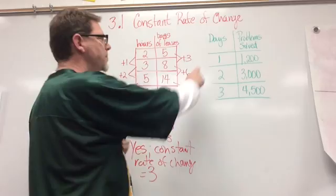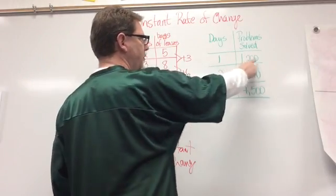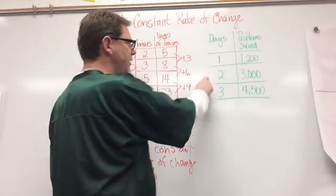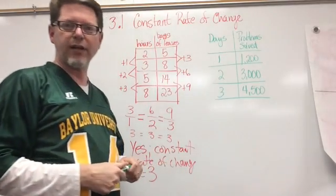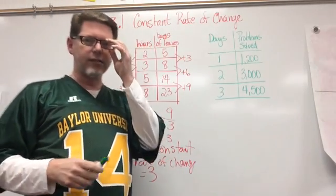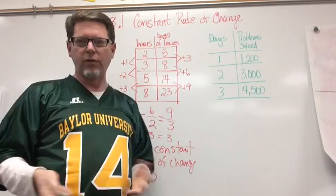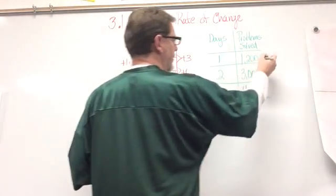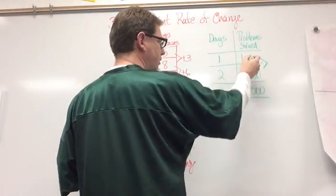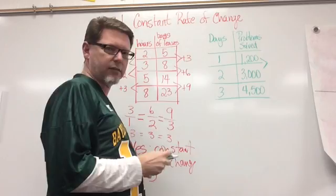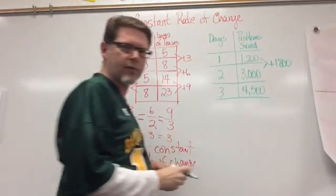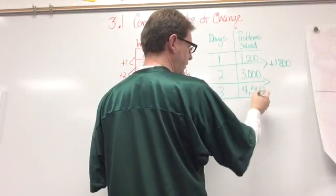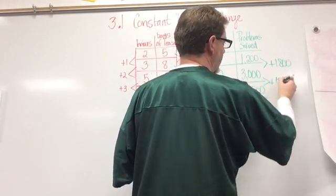So if I look at on the first day, we had 1,200 problems solved. On the second day, 3,000. And on the third day, 4,500 problems solved. So let's look and see if we have a constant rate of change. We're going to look at our y's. How do I get from 1,200 to 3,000? I'm adding 1,800. Okay. Well, how do I get from 3,000 to 4,500? I'm adding 1,500.